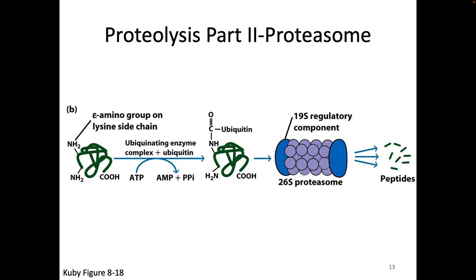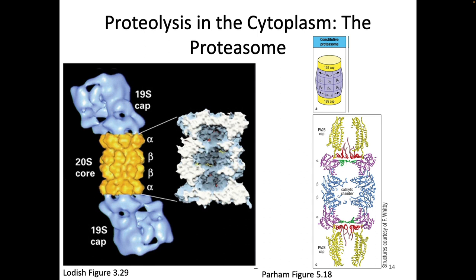This is generally how we degrade cytoplasmic proteins in the cell. The proteasome has a cap on either end and then four ring-like structures each made up of seven different individual proteins. Those rings make a nice little chamber, almost like a barrel, where we have lots of active protease sites. You don't want random protease floating around the cell, so you keep the proteolytic activity inside this barrel.